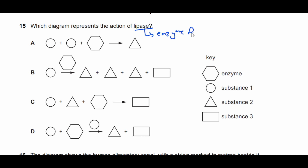Question fifteen: which diagram represents the action of lipase? Lipase is an enzyme for lipids and fats. The action of the enzyme would be B — the hexagon represents the enzyme. Lipase breaks down fats and lipids; the substrate connects with the active site and is broken into smaller products. The enzyme is not consumed in the reaction; it only makes the reaction go forward. Therefore B is the answer.